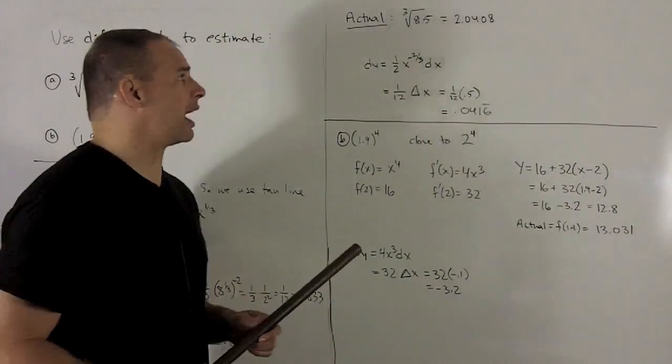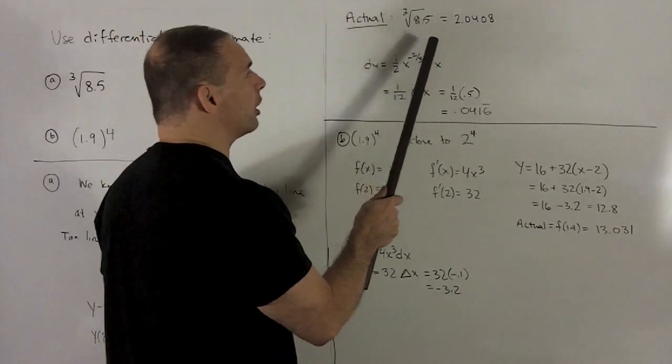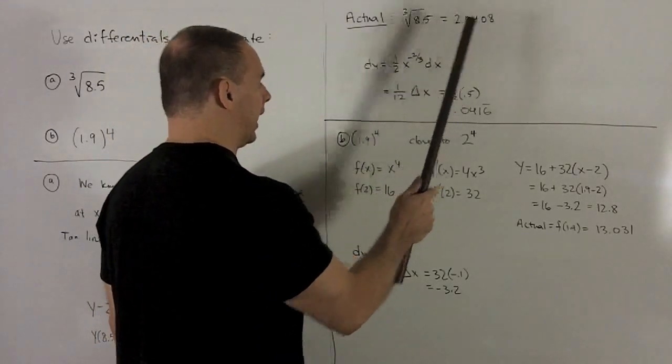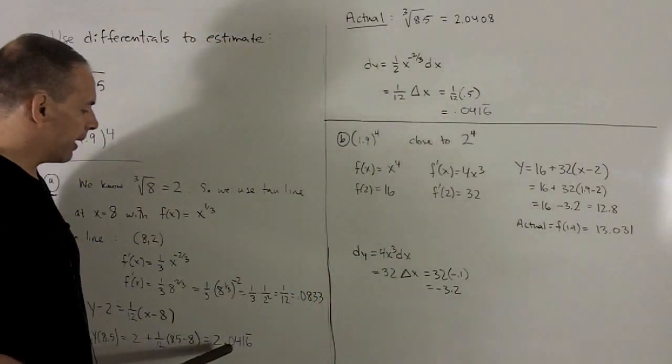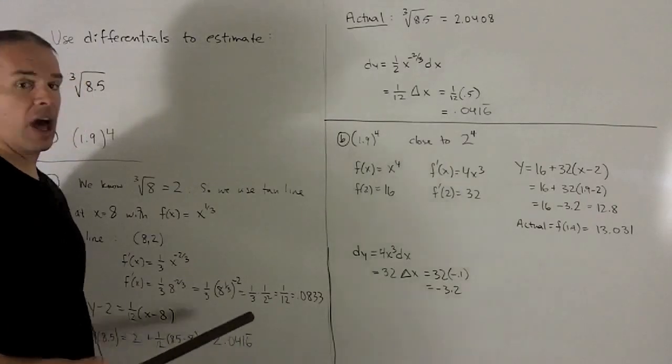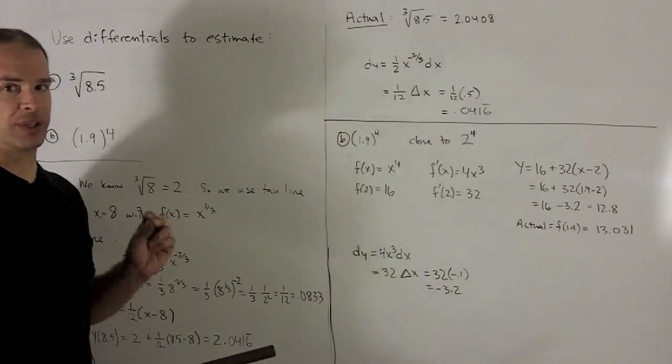Let's take a look at the real value. For the real value, I go to a calculator, and I get 2.0408, and we see that that's not so bad. We get this down to the hundredths place just by using the tangent line.